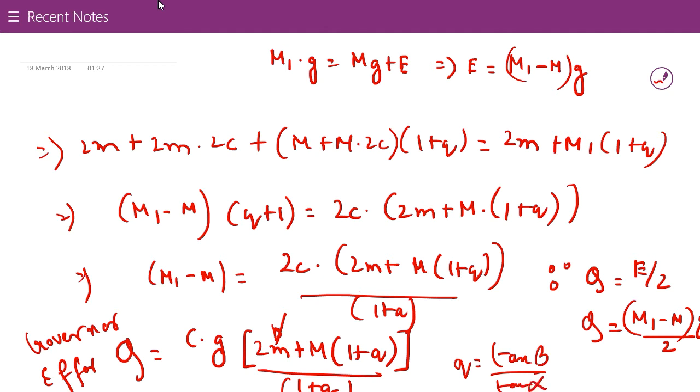With this equation, we can actually find out what effort the governor is making in lifting the sleeve upward. Because every time the speed is higher due to the reduction of load, the sleeve will go up. This is the equation of Q. Thanks for being with me, and this is the equation as we have discussed for governor effort Q.